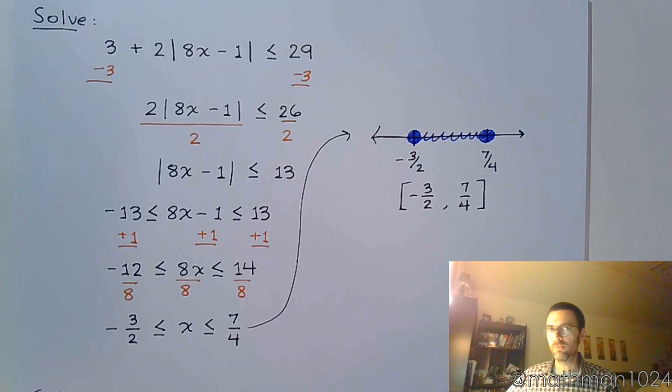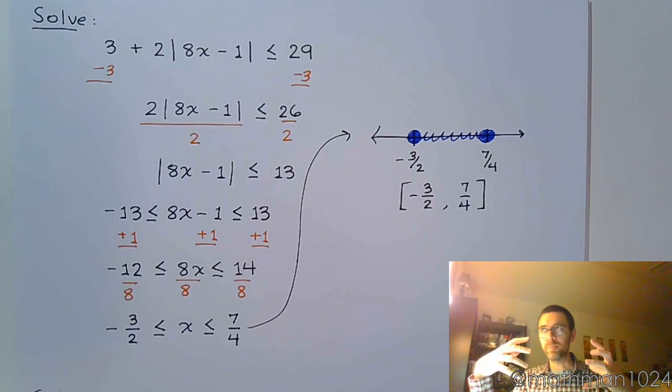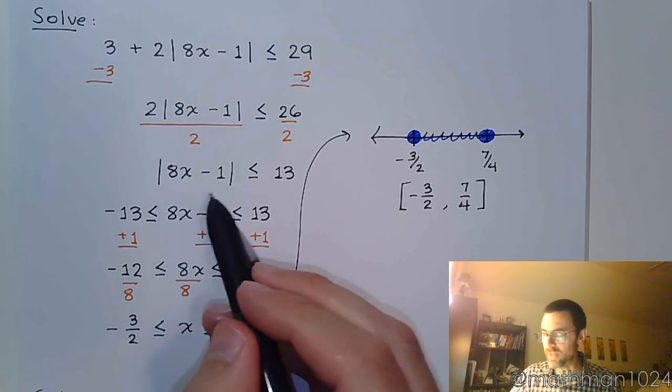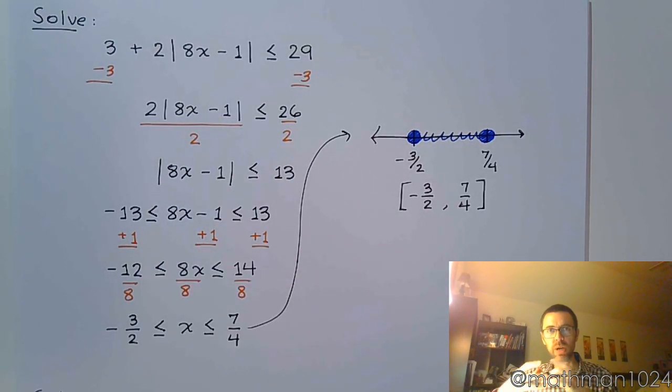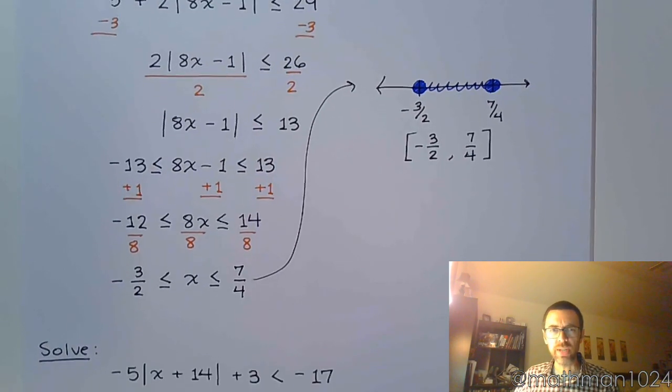So the key thing here, first of all, is to get the absolute value by itself. And the second part is to identify whether it's boundaries or like pushing away. So this, having the distance less than meant to stay close by, have those boundaries, have those restrictions. Let's look at this next example.